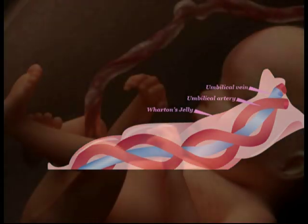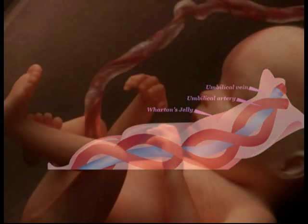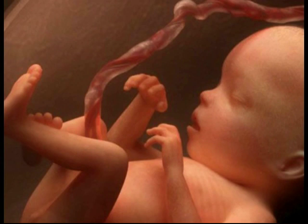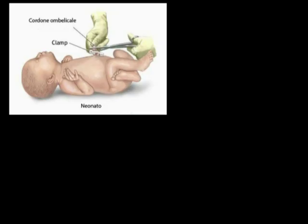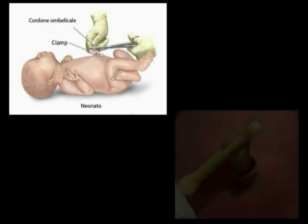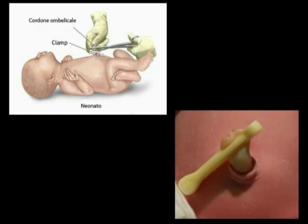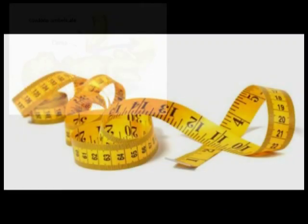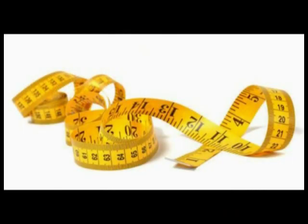La lunghezza media di un cordone umbilicale normale a termine è di 55 cm e, generalmente, esso si presenta attorcigliato attorno al proprio asse da 5 a 10 volte. Dopo la recisione, che avviene alla nascita, rimane una porzione di cordone umbilicale detta moncone, di colore bianco grigiastro e molle al tatto.